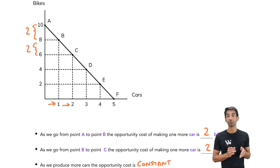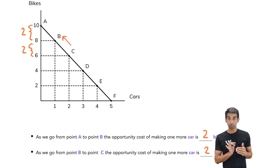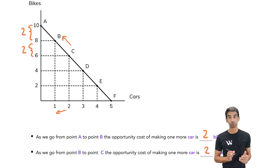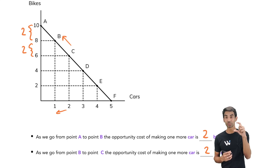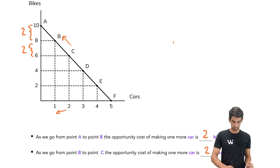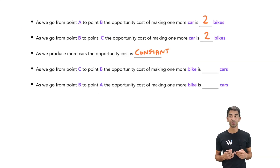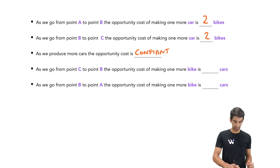But what if we wanted to go the opposite way — from point C to point B? As we go from C to B, we're now making more bikes: 2 more bikes. How many cars do we have to give up to make those 2 extra bikes? We have to give up 1 car — we go from 2 to 1. So instead of rise over run, we're doing run over rise, or change in x over change in y. In this case that would be 1 over 2, which is 0.5 or a half. To make one extra bike, we have to give up 0.5 cars.